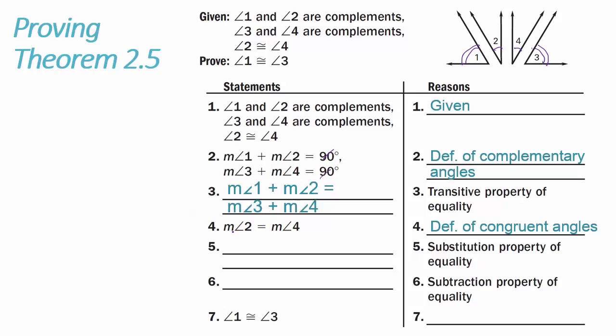Building off of that, knowing the measure of angle 2 equals the measure of angle 4, I replace angle 4 with angle 2 and rewrite the equation as: measure of angle 1 plus angle 2 equals measure of angle 3 plus angle 2 — that's the substitution property. Subtracting the measure of angle 2 from both sides using the subtraction property of equality gives us measure of angle 1 equals measure of angle 3, so angle 1 is congruent to angle 3 by the definition of congruent angles.